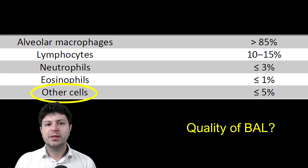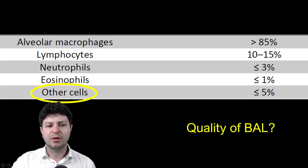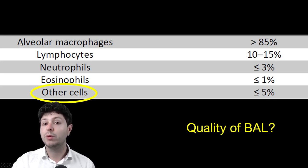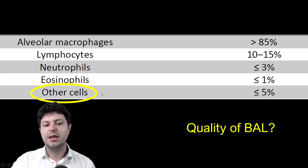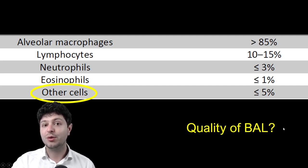It's not very complicated. You've got alveolar macrophages, lymphocytes, neutrophils, eosinophils, and other cells. This is what will be reported on a bronchoalveolar lavage differential cell count — what you will get from the pathologist. I've highlighted this in yellow because it's very important to have a good quality bronchoalveolar lavage.